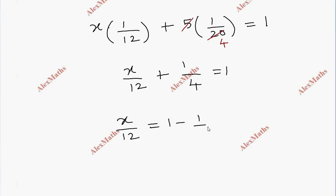1 minus 1 by 4. The LCM is 4, so 4 minus 1. So X by 12 is 3 by 4.